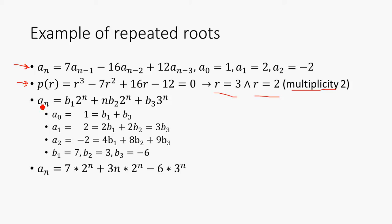So that means our recurrence is going to take the form a_n equals b1*2^n plus n*b2*2^n, because this has multiplicity 2, plus b3*3^n.